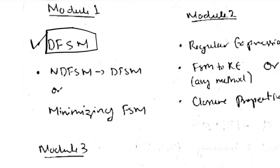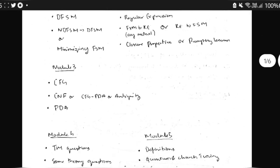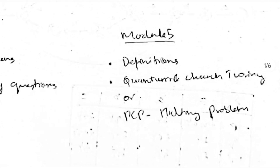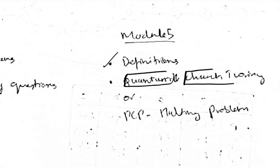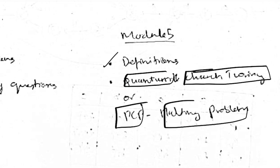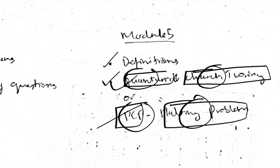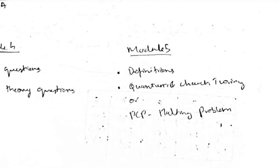You need to know DFSM. I have given some questions in the module, and those are the most repeated ones — make sure you solve them. For Module 5, you can easily score marks because definitions are there: classes of P and NP, recursive — just a few lines to memorize. After that, either do Quantum Computing and Turing Thesis, or do PCP and Halting Problem, as they might come as an 'or' option. You can score 20 marks on Module 5 easily.